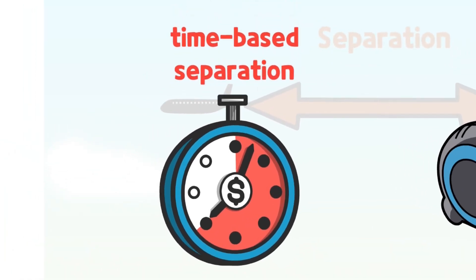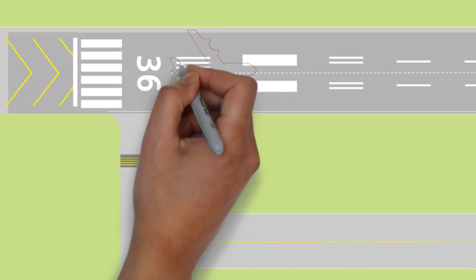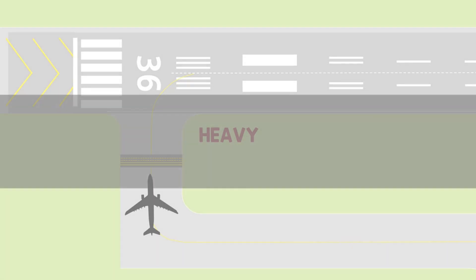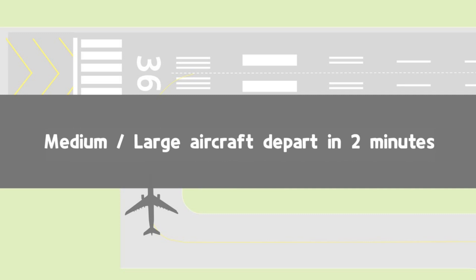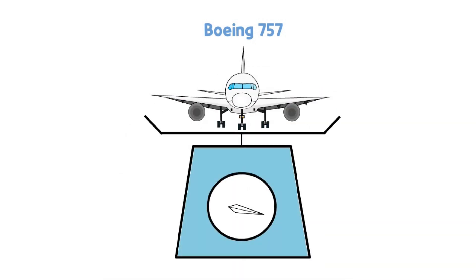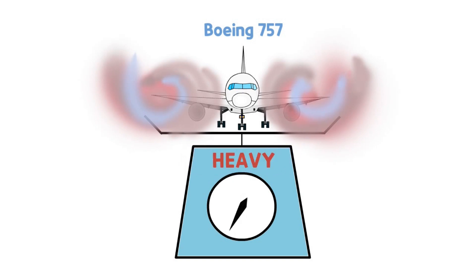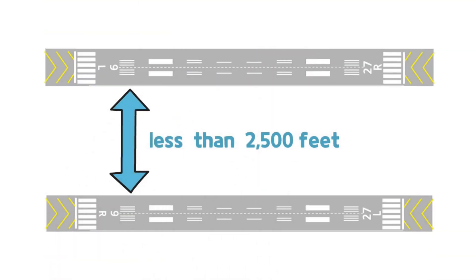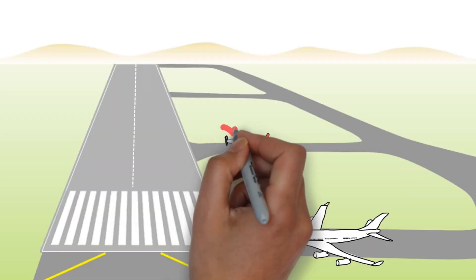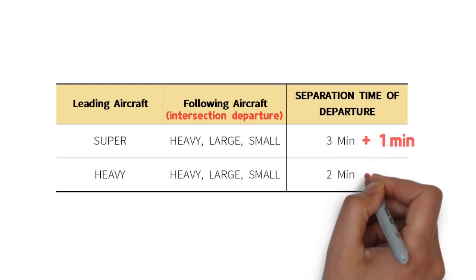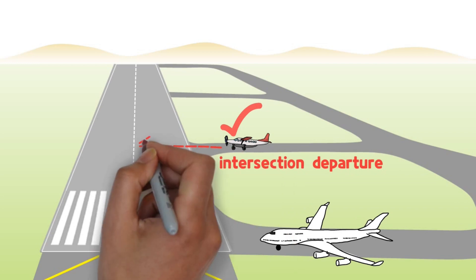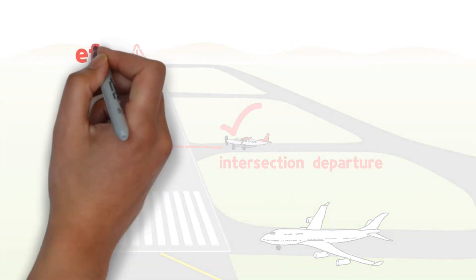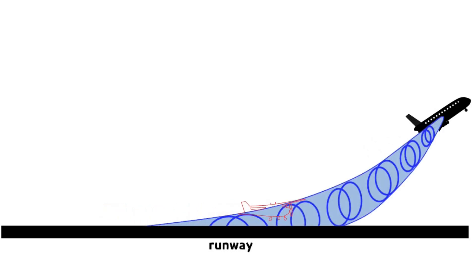The criteria for time-based separation are shown in the table. For instance, if a heavy aircraft departs on the same runway, a medium aircraft must depart at least two minutes later to avoid the danger of wake turbulence. Boeing 757 is an exception — its category is large or medium, but the wake turbulence it actually generates is heavy-level, so it is separately categorized. Also, parallel runways separated by less than 2,500 feet are considered one single runway for wake turbulence separation purposes. During takeoff separation, intersection departures require one additional minute of separation compared to full-length runway departures, as efficiency-driven intersection departures increase the danger of wake turbulence.